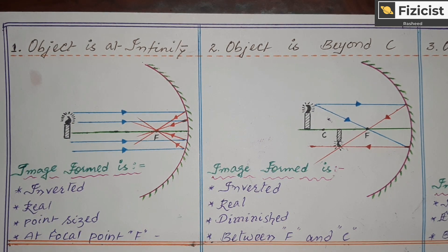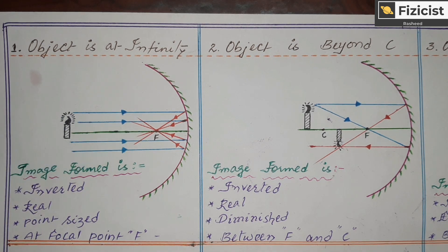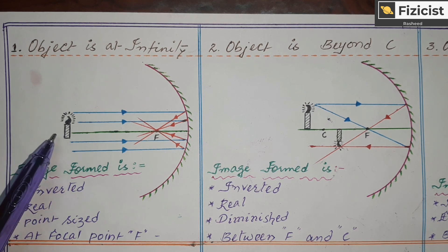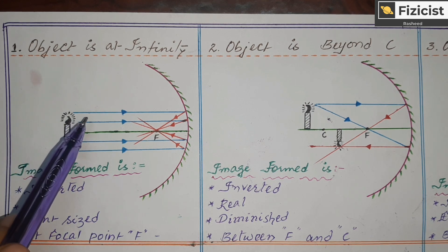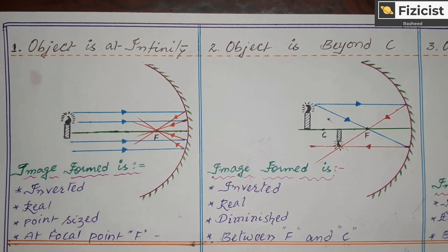One thing to remember: when the light rays are parallel, after reflection they meet at the focus. So when the object is kept at infinity, the light rays are parallel and the image is formed at the focus. This is the key point to remember in this ray diagram.